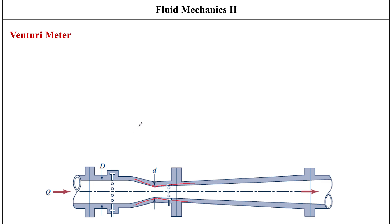Most of the head loss in a well-designed venturi meter occurs because of friction losses along the pipe wall, rather than losses associated with flow separation. Losses only take place because of friction — not because of separated flows and inefficient mixing, which does not happen in a venturi flow meter.